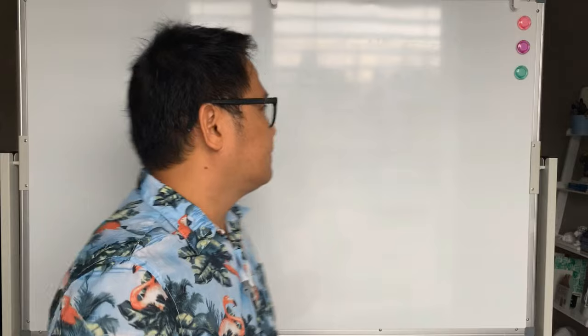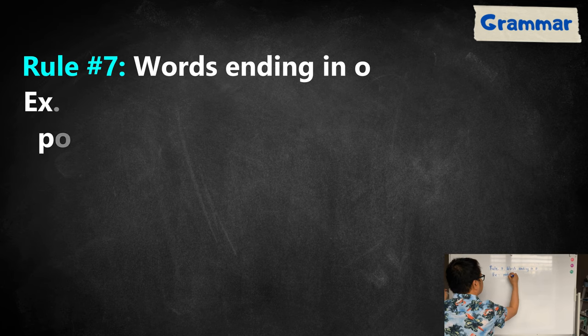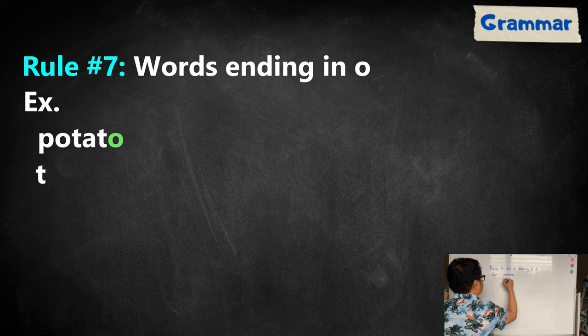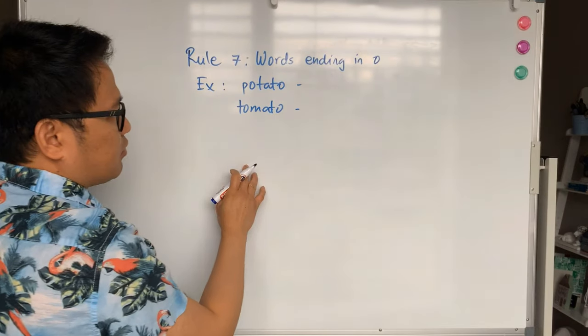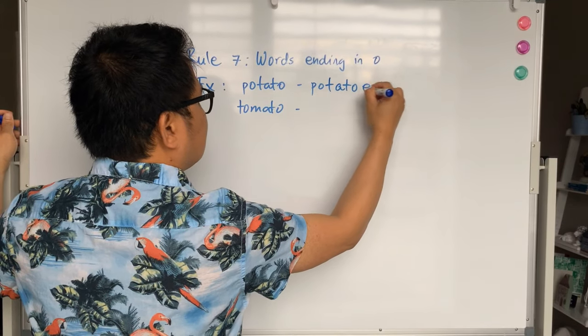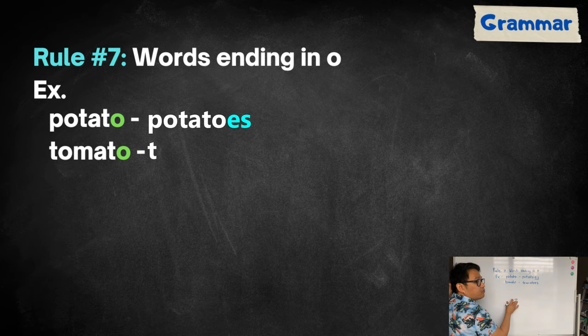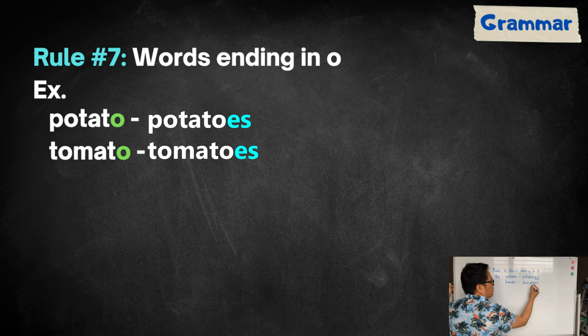The seventh rule is for words ending in O. For example, potato, tomato. To make these words plural, you just need to add E-S at the end of the word. So, potato will become potatoes and tomato will become tomatoes.